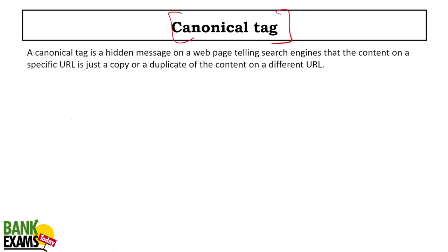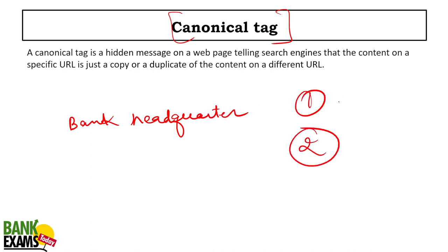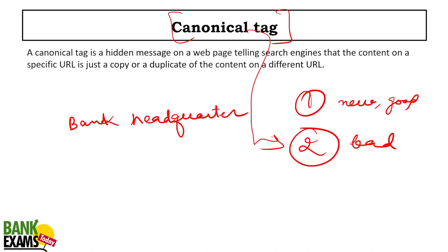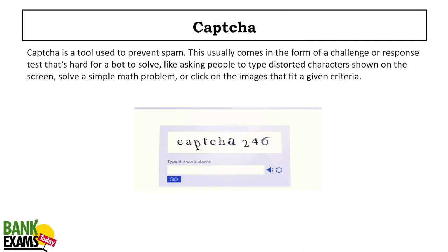Canonical tag: if there are two pages on bankexamstraday.com with the same content — say, a list of bank headquarters — and page one is the better page, you put a canonical tag on page two telling the search engine that it is a copy of page one, so give the link juice to page one only. It is a hidden message in the webpage telling the search engine that the content on a specific URL is a duplicate.